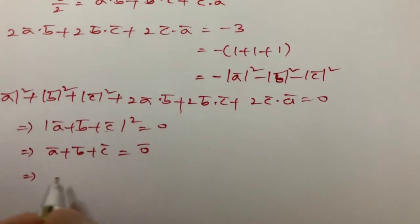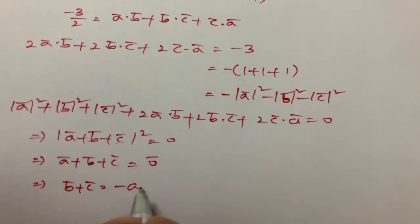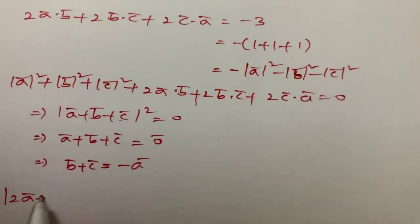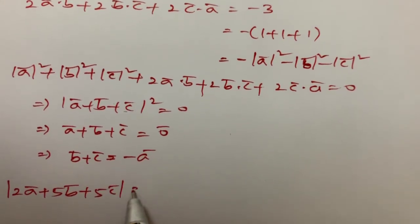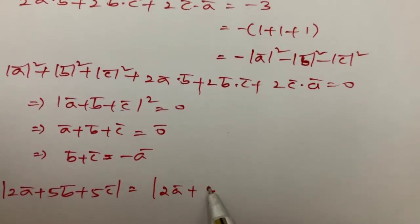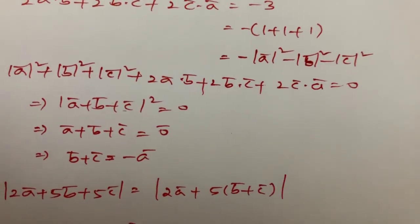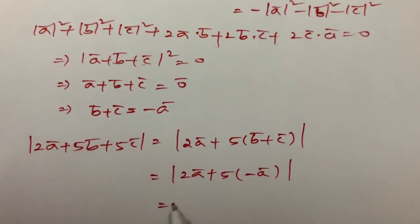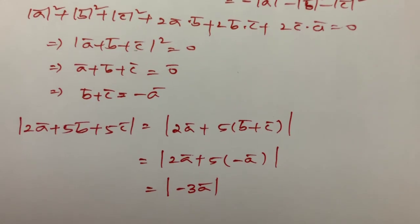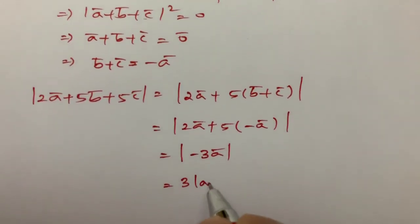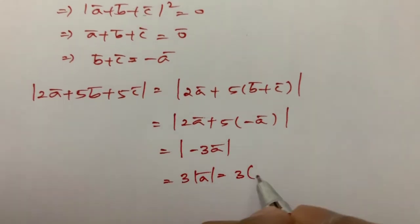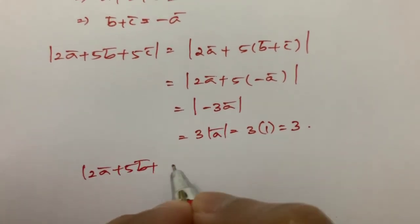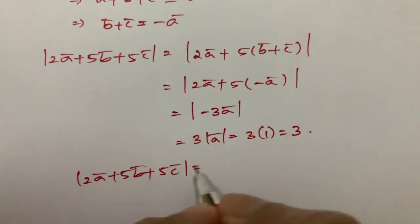From a-bar + b-bar + c-bar = 0, we get b-bar + c-bar = -a-bar. What we want is |2a + 5b + 5c|. We can write 2a-bar + 5(b-bar + c-bar) = 2a-bar + 5(-a-bar) = -3a-bar. So this is 3 times the magnitude of a-bar, and since |a-bar| = 1, the answer is 3.